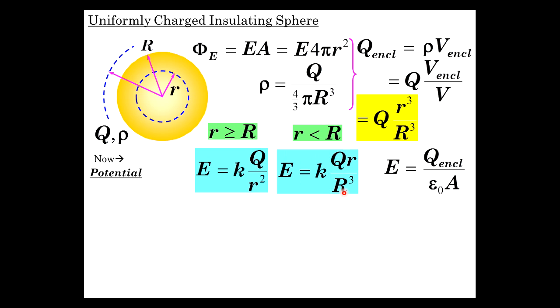But epsilon 0 A, the A is 4 pi r squared. So it takes care of two of these r's. There's only one r left.